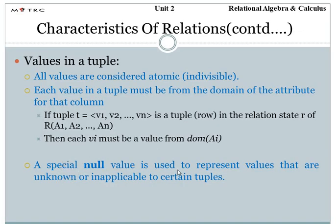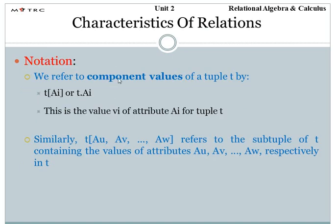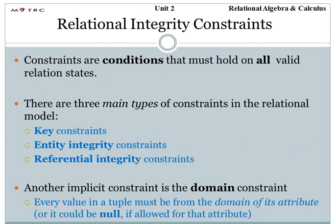An important point: a special null value is used to represent values that are unknown or inapplicable to certain tuples. We can also denote the association between a tuple and an attribute as t[a1] or t.a1, where the value vi of attribute ai for tuple t is denoted for the respective attribute a1. This is the notation used to represent relations with their respective attributes and values.